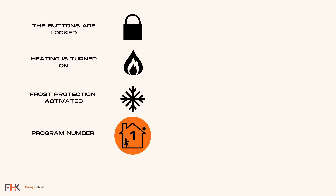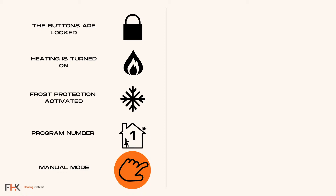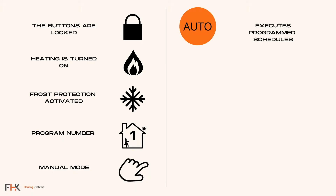The house symbol with a number inside represents which program schedule the unit is using at that time. The hand symbol means the unit is in manual mode and will ignore its timer and will follow the temperature you have set at that time. The auto symbol means the unit is in automatic mode using its preset timer.